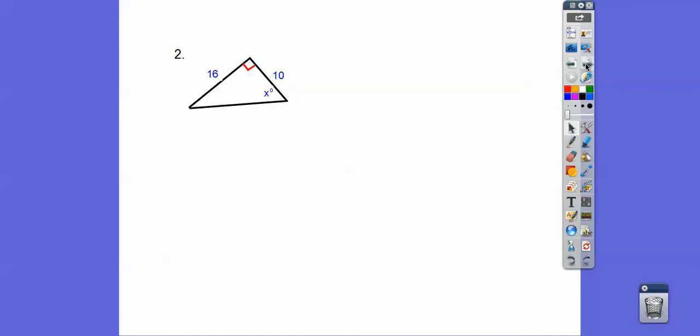Number two, this is a tangent ratio because the hypotenuse is not being used. So tangent of x is opposite over adjacent, 1.6. And then we do inverse tangent or shift tangent of 1.6, and you should get about 58 degrees. Remember it said round to the nearest degree.